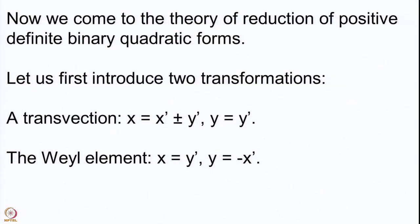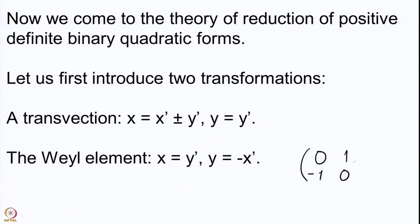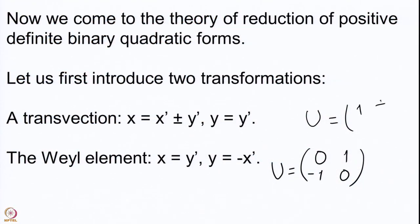The second transformation, for want of a better name I will call it the Weyl element. It is written as the matrix [[0, 1], [-1, 0]]. Both the transvection and Weyl element matrices have determinant equal to 1. These are the two very important transformations we are going to study.